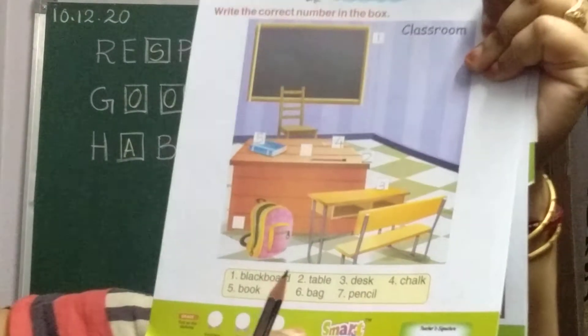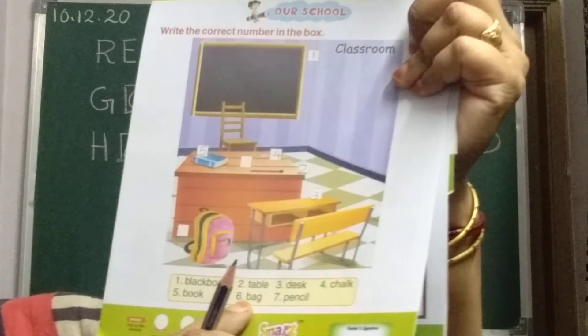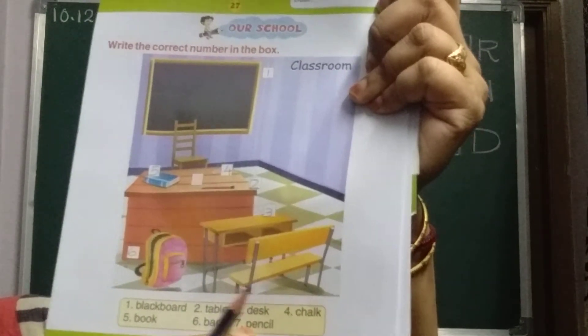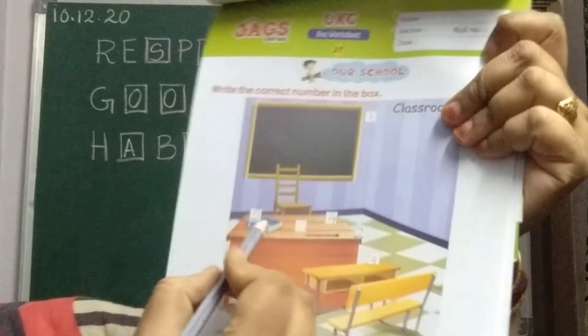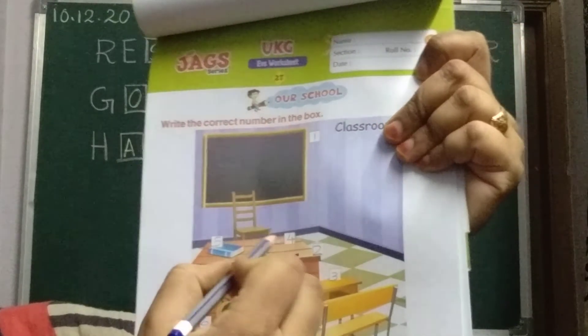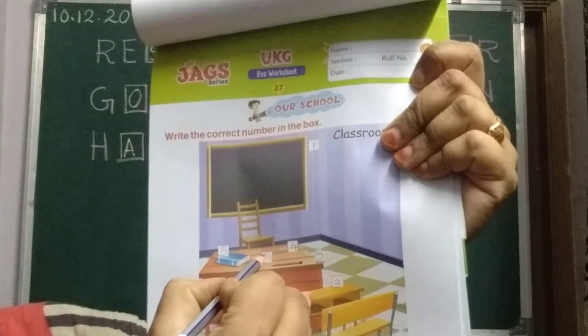Now, number 6 is bag. Where is the bag? Here, 6. Then, 7 is pencil. Pencil is also on the table. So, number 7 you should write here, near the pencil.